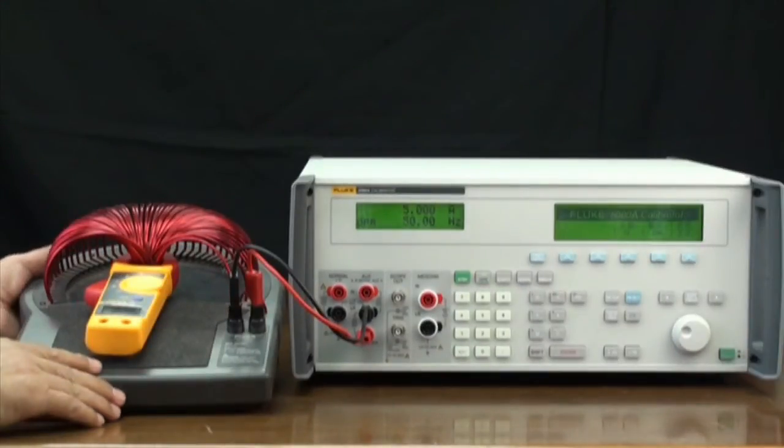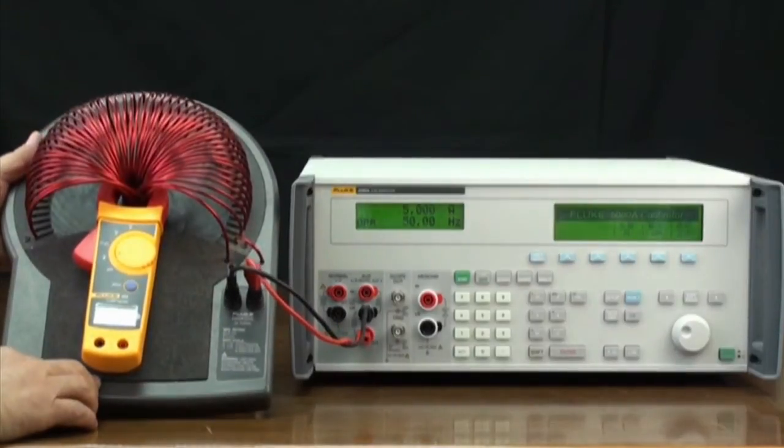Examine the test results. The clamp meter displays 248.8 Amps.